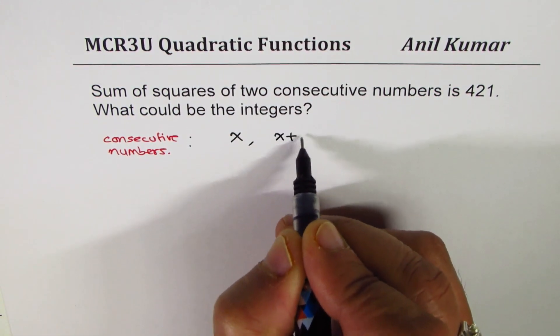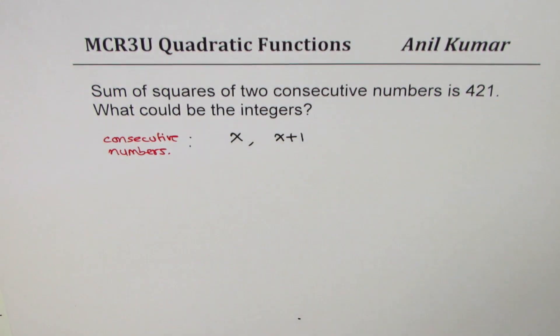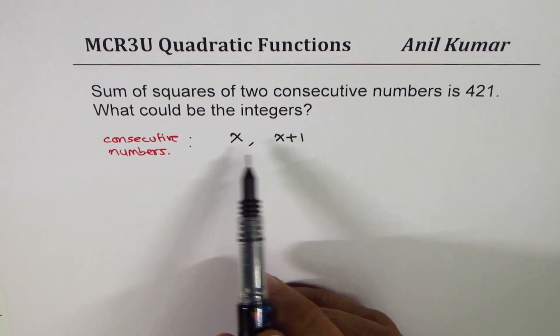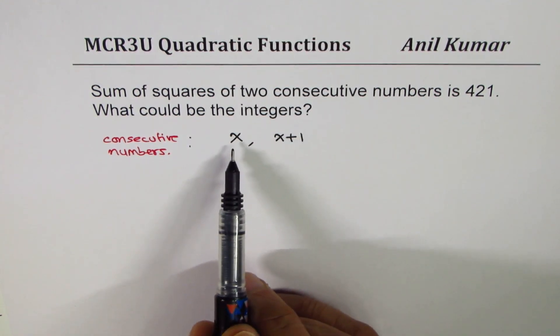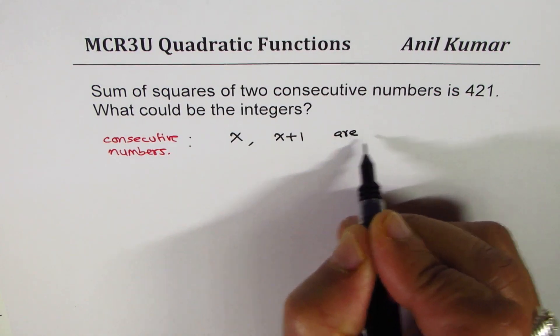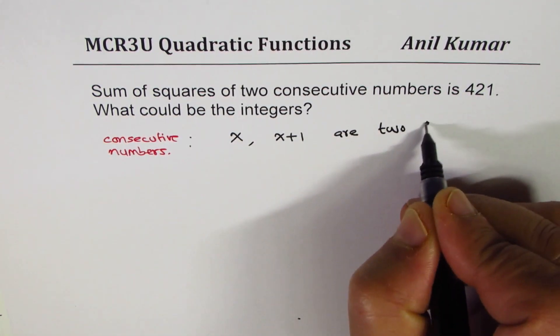So the consecutive numbers could be defined as: if x is one number, the other number is going to be x plus one. You could say x minus one also, right? Let's take x plus one. So x and x plus one are two consecutive numbers.